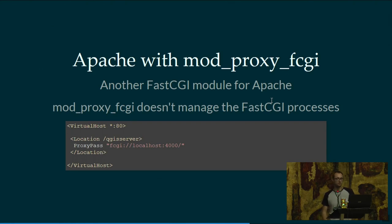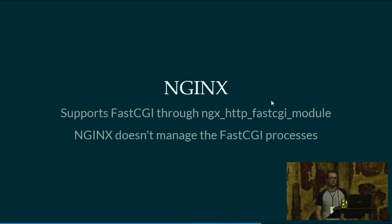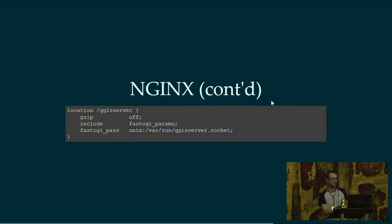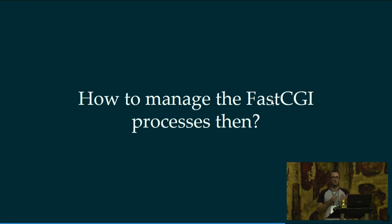There is another Apache module — the proxy_fcgi module — but it's very different because it will not manage the FastCGI processes for you; you have to do it yourself. This is exactly the same case as with Nginx: with Nginx, there is only one module you can use and it doesn't manage the FastCGI processes for you. So with both proxy_fcgi and Nginx, you need to manage the processes yourself.